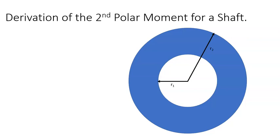For the next few minutes, we're going to go through the derivation of the second polar moment for a shaft. We're going to begin with the definition of the second polar moment, which is defined as the integral of r squared times dA.